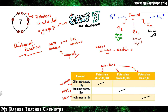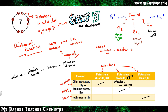Chlorine reacting with potassium bromide goes from colourless to orange, meaning bromine has been displaced and chlorine is now part of the compound. Word equation: chlorine + potassium bromide → bromine + potassium chloride. Symbol equation: Cl₂ + 2KBr → Br₂ + 2KCl. This proves chlorine is more reactive than bromine.